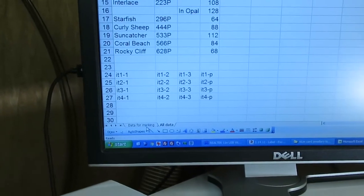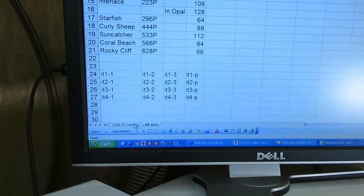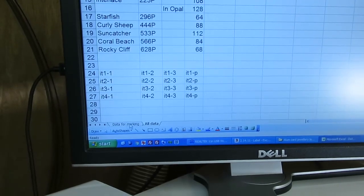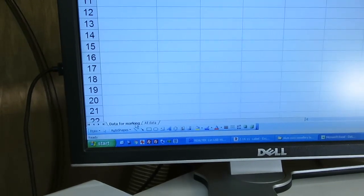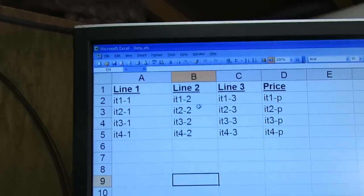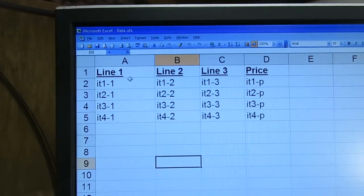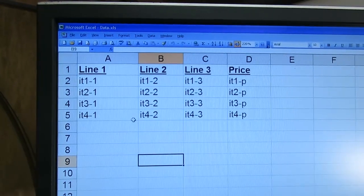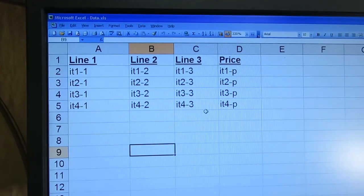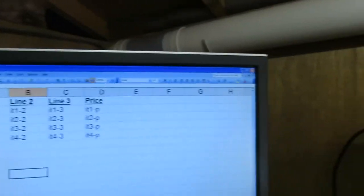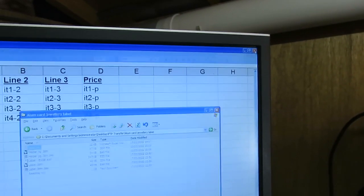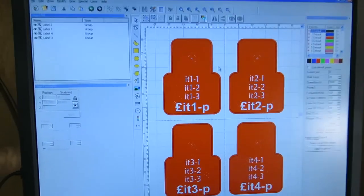So remember that EasyCAD will only read the first sheet from the Excel file, so in data for marking these are the four labels which will be marked and just now I've got in some filler text just so you can get the idea. Close the Excel file and go back to EasyCAD.